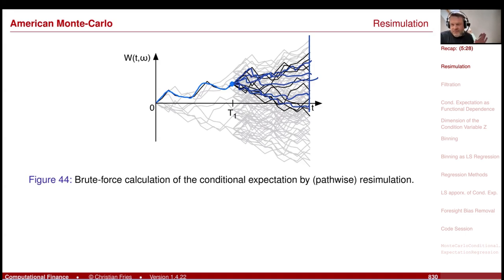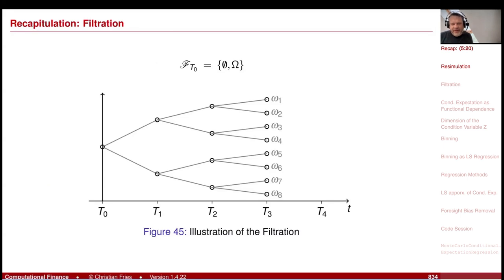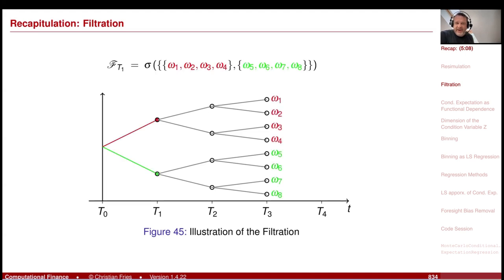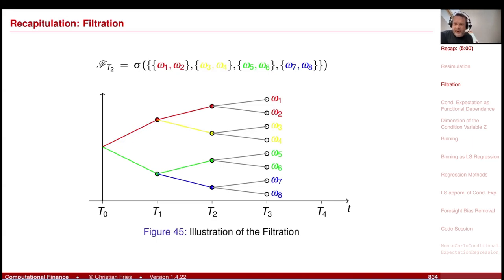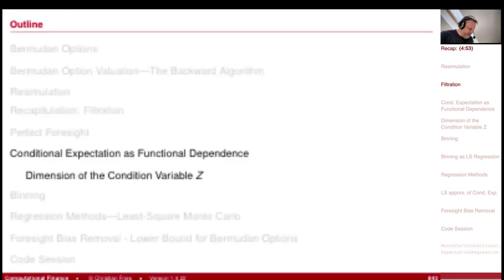This is linked to the filtration. If you have just two events — up or down — the filtration becomes finer and finer as events happen. First you can distinguish the red and the green, then the red, yellow, green, and blue, and so on. Every time step adds another possibility, so that was the problem.